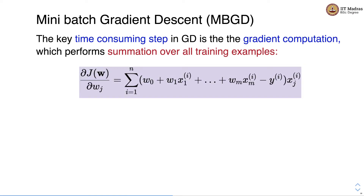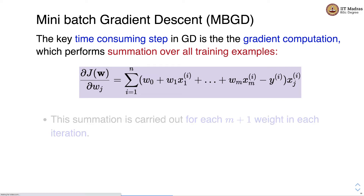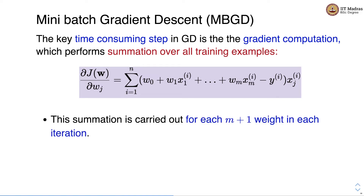As we said, the most time-consuming step in gradient descent is the gradient computation because it involves summation over all training examples. This summation is carried out for all m+1 weights in each iteration.